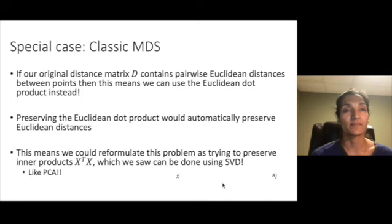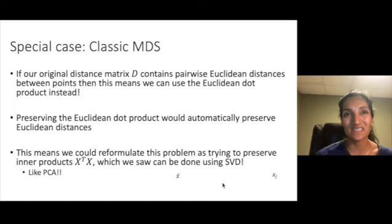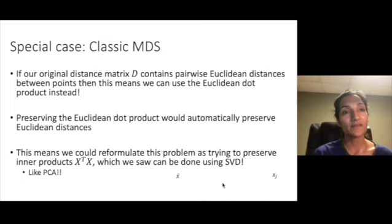There is a particular case where there is an analytic solution. If we know that our original distance matrix contains pairwise Euclidean distances this means that we could actually use the Euclidean dot product instead and that's starting to sound something like PCA but I'm going to make that connection sharper. First off preserving Euclidean dot products would automatically preserve Euclidean distances. This means that we could reformulate this problem one as trying to preserve an inner product which we saw can be done using SVD like in PCA. So there would be no need for the steepest descent algorithms.